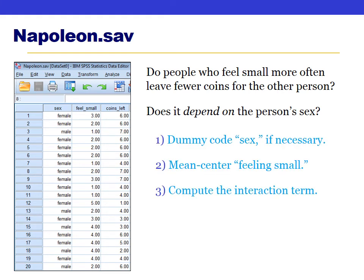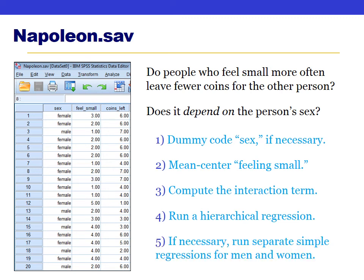Try these four steps. First, if necessary, dummy code the sex variable so it's coded as zero or one. Second, mean center the feeling small variable by calculating the mean score and computing a new variable that subtracts the mean from each person's score. Third, compute the interaction term by multiplying the dummy-coded sex variable by the mean-centered feeling small variable. Then run a hierarchical regression with sex and mean-centered feeling small in step one, and add the interaction term as a third predictor in step two. If the interaction is significant, split the file by sex and run separate simple regressions for men and women.